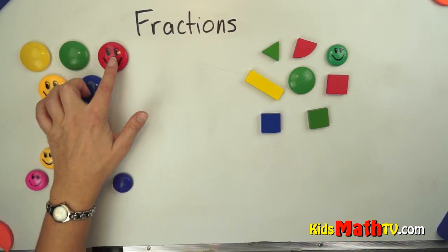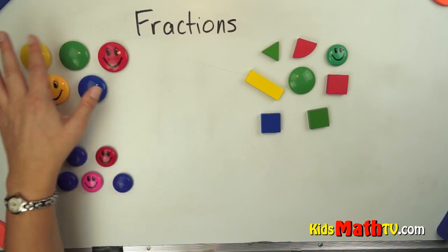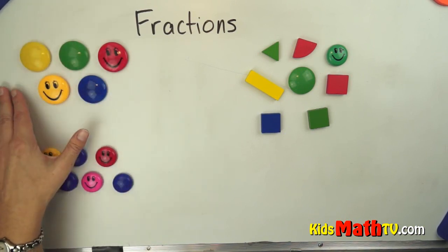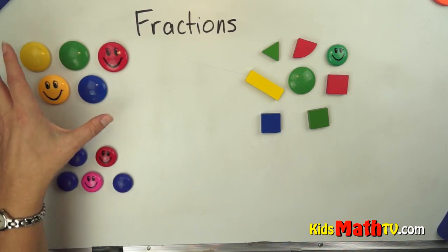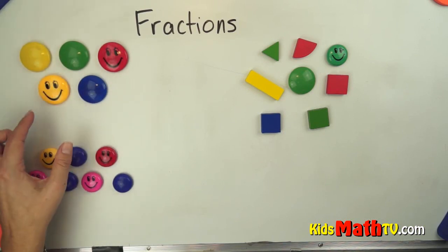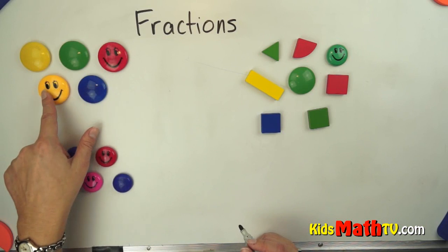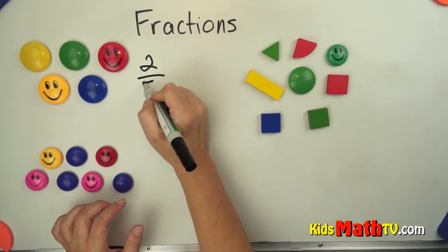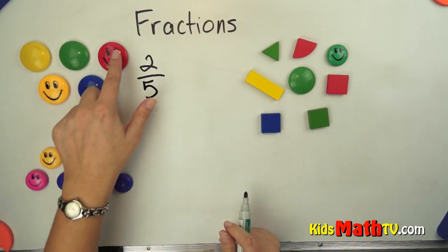I have one, two, three, four, five circles here. They're different, some are the same, some are different, but there are five circles, so my whole is five. In this case, I see two have smiling faces, so two is the part and five is the whole. Two out of five.